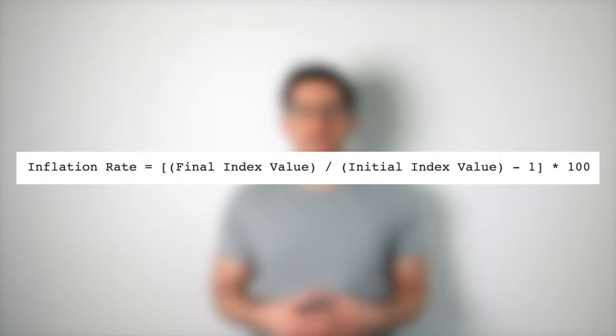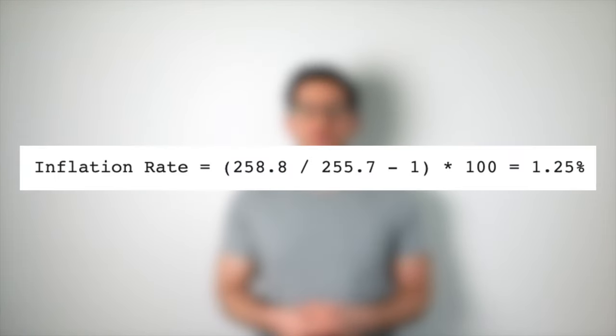We can calculate the annual rate of inflation, or the change in prices for any time period, using CPI values with the following formula. The annual CPI was 255.7 for 2019 and 258.8 for 2020. We can calculate the annual inflation rate like this.